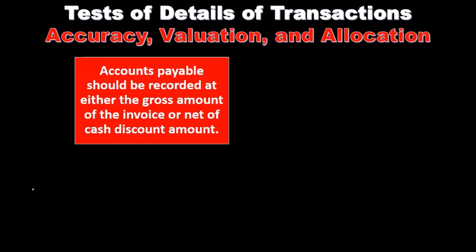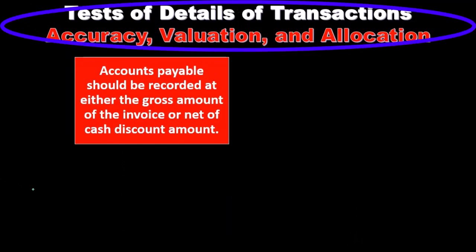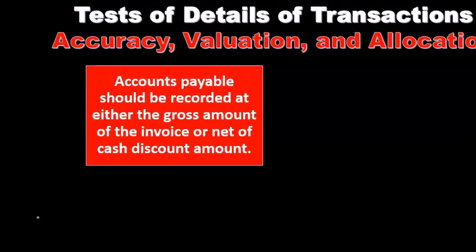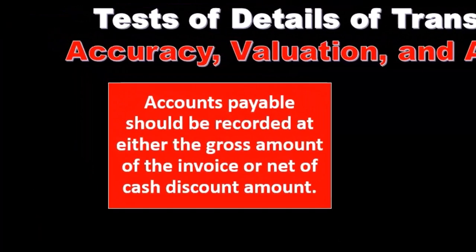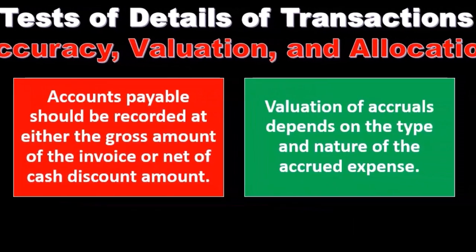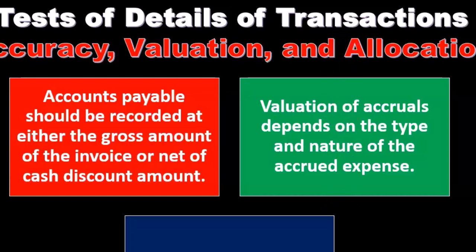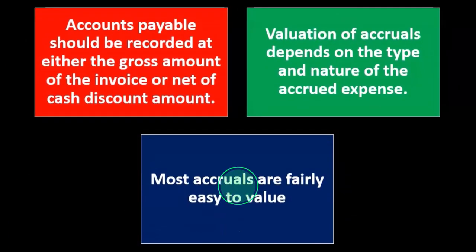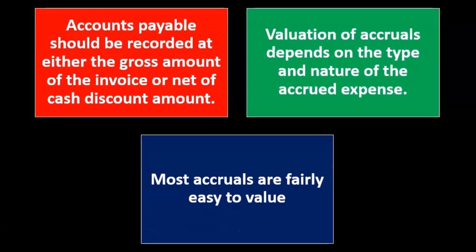For accuracy, valuation, and allocation: accounts payable should be recorded at either the gross amount of the invoice or net of the cash disbursement amount. Valuation of accruals depends on the type and nature of the accrued expenses, and most accruals are fairly easy to value.